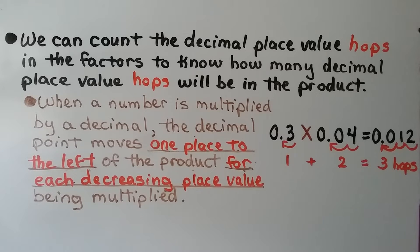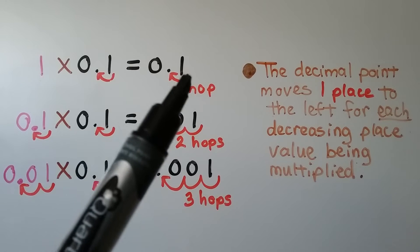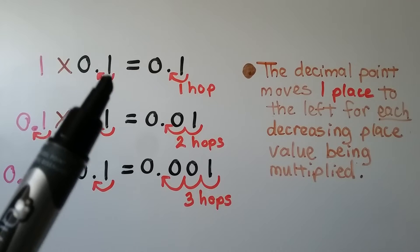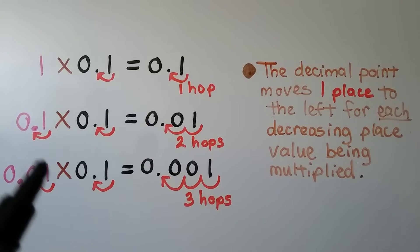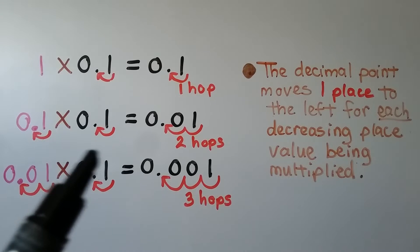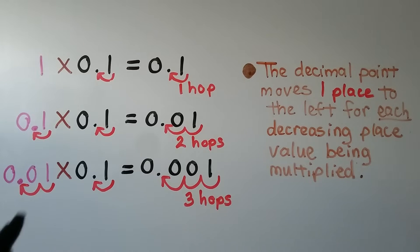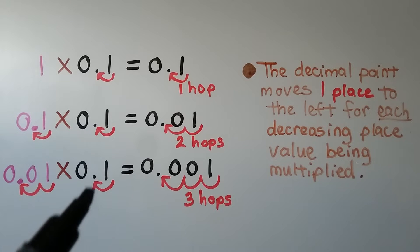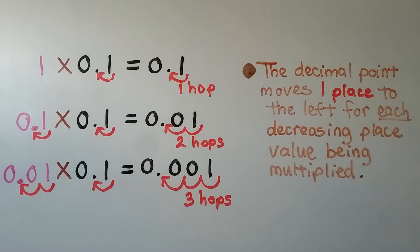We might even have to add a zero as a placeholder sometimes. We have 1 times one-tenth — there's one decimal hop, so there's going to be one decimal hop in the product. One times one-tenth is identity property, so it keeps its identity — it's going to be one-tenth. For one-tenth times one-tenth, we now have two hops, so the product equals one-hundredth. When we multiply one-hundredth times one-tenth, we have three decimal hops — the product equals one-thousandth. The decimal point moves one place to the left for each decreasing place value being multiplied.